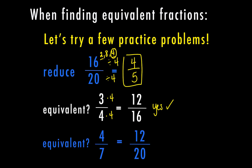For the last example, we want to know: is 4 sevenths equivalent to 12 twentieths? Using the same process, we multiply 4 times 3 to get 12. On the bottom, we multiply 7 times 3, which equals 21 — not 20. So no, these are not equivalent fractions.